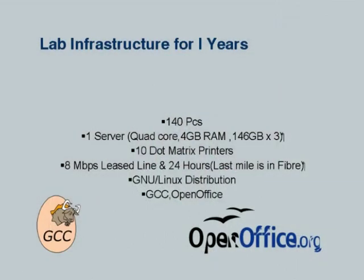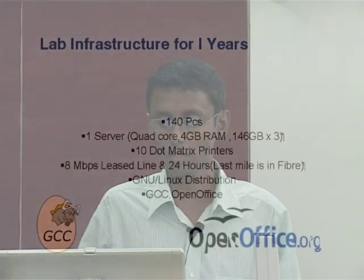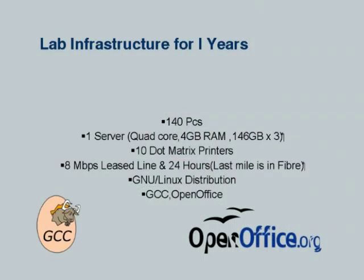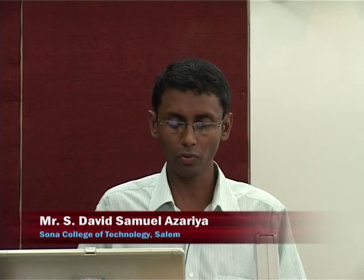Our lab infrastructure has 140 systems entirely for first-year students. Our intake is 750 students. We have two servers installed with a Linux distribution using a server-client mechanism, and the clients also run Linux. We use OpenOffice and GCC compiler. All proprietary software in our college is licensed — we pay a large yearly amount to Microsoft for a campus university license. Everything else is open source.